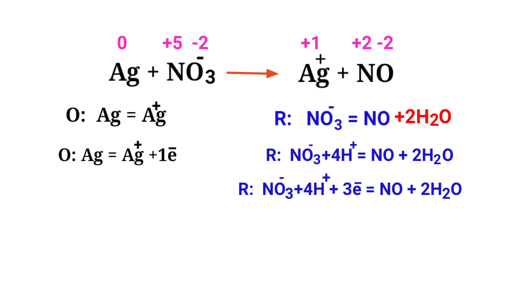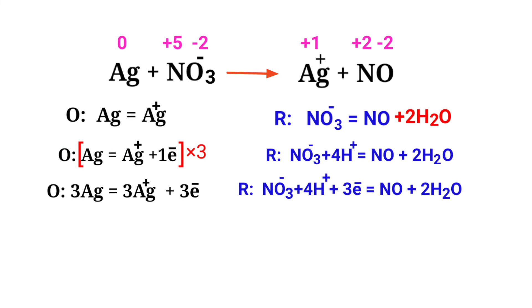The electrons lost in the oxidation half reaction must equal the electrons gained in the reduction half reaction. The oxidation half reaction has one electron, but the reduction half reaction has three electrons. To equalize them, multiply the oxidation half reaction by a coefficient of three. Now you can add both half reactions together.